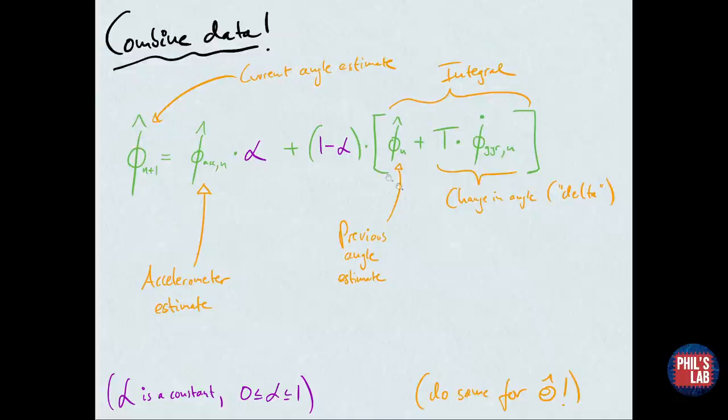The sample time times our roll rate or pitch rate. This whole term is the time integral, which gives us our current angle estimate using the output of the complementary filter and the gyroscope. We merge this accelerometer data with the gyroscope integral, and depending on how we select alpha, we either prefer the accelerometer estimate or the gyroscope estimate. This is done for roll, but we can do the same thing for theta, our pitch.